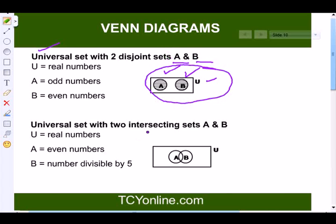Now next is when the two sets are intersecting sets. For this, the example is where we consider U as the real number set, A as the even numbers, B as a number which is divisible by 5. So we know that 10 is an even number and it is divisible by 5. So there is some intersection between both the sets A and B.